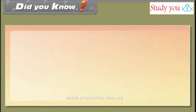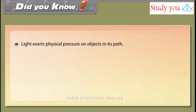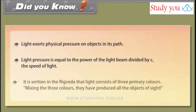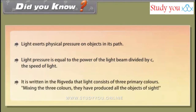Did you know? Light exerts physical pressure on objects in its path. Light pressure equals the power of the light beam divided by c (the speed of light). It is written in the Rig Veda that light consists of three primary colors, and by mixing these three colors all the objects of sight are produced.